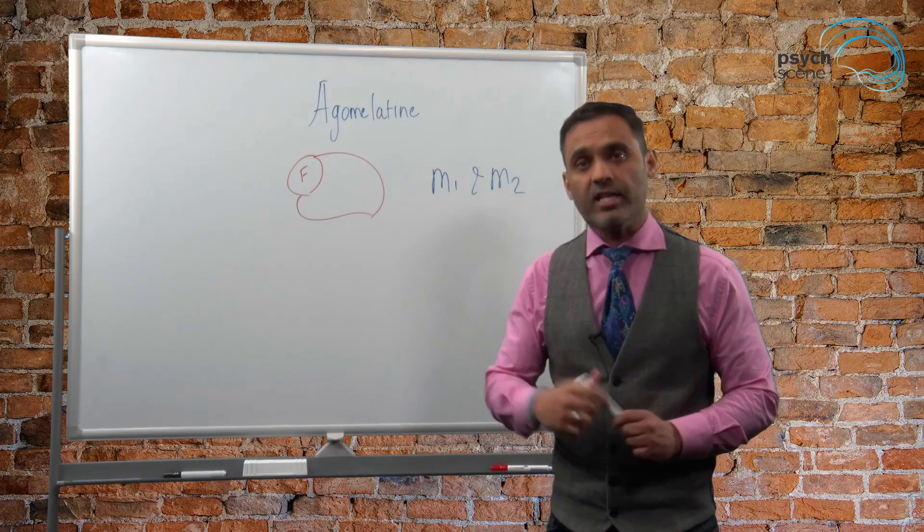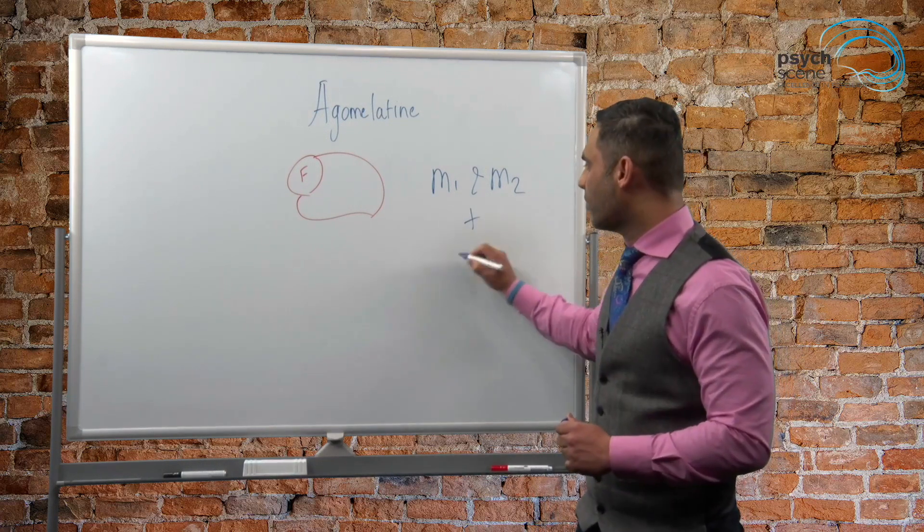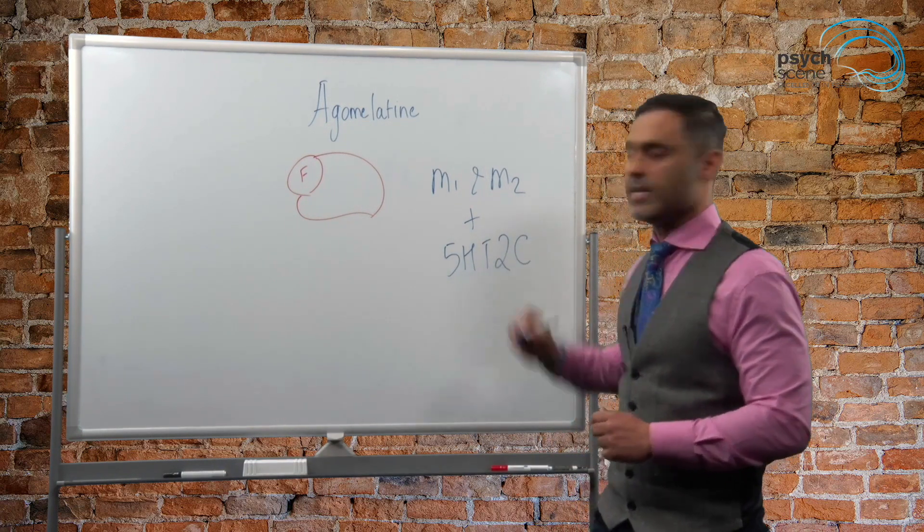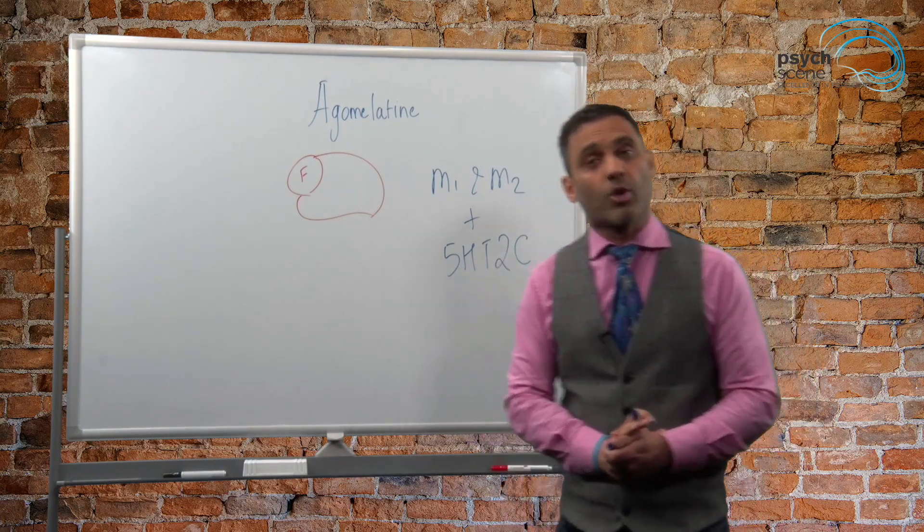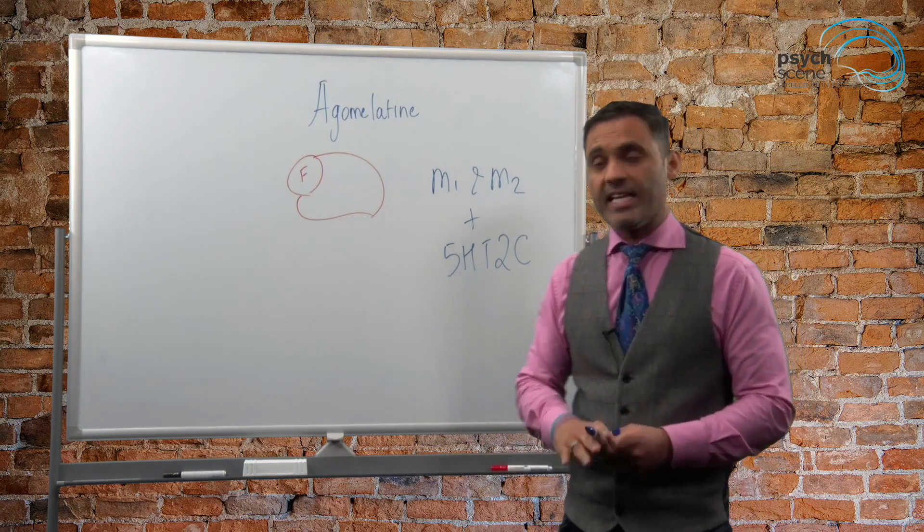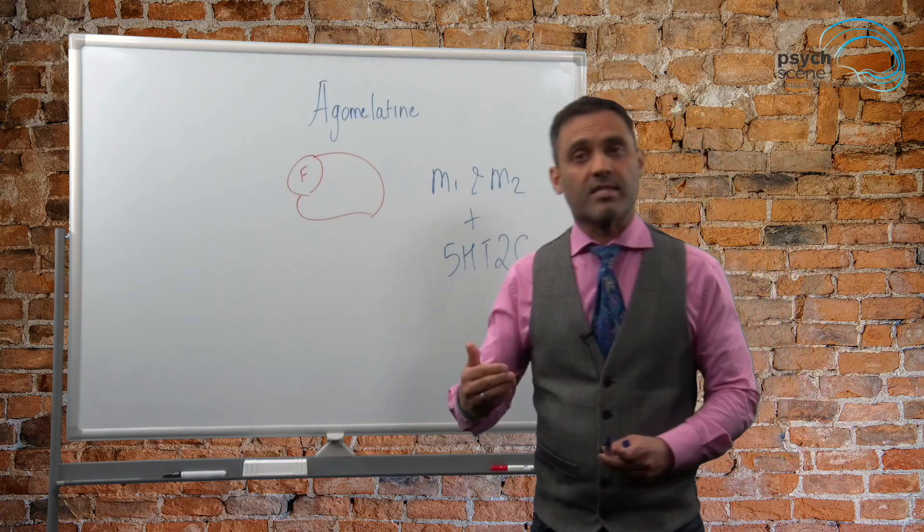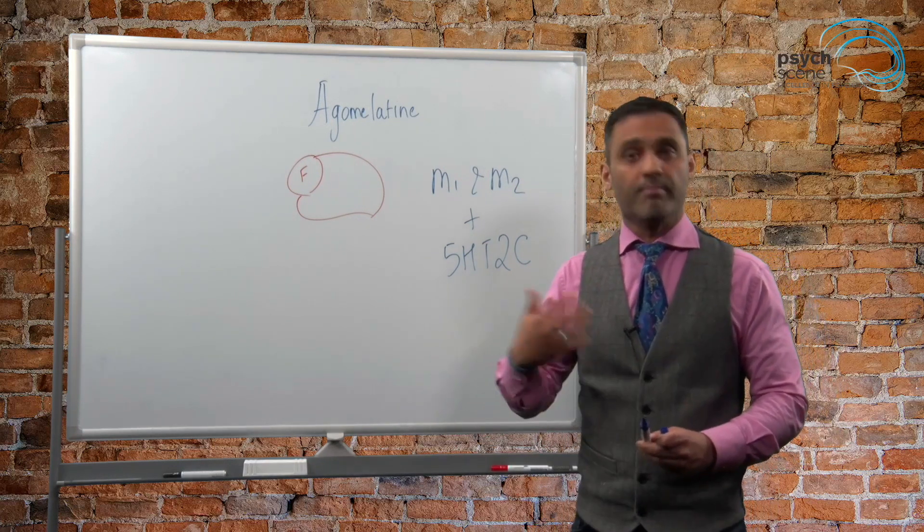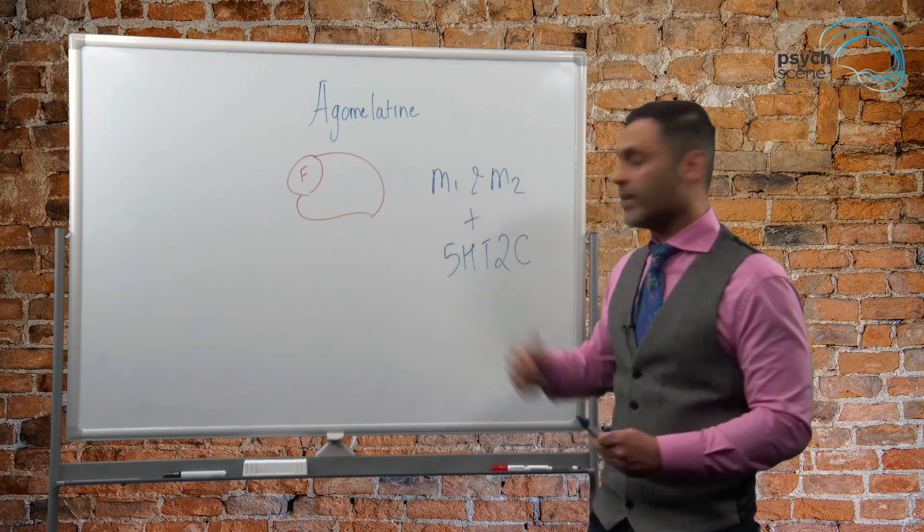It has a second property whereby it is a 5-HT2C antagonist. This is a specific serotonin receptor. It actually antagonizes this receptor, so it blocks the 5-HT2C.